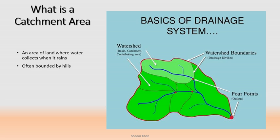Now, just as a bucket stores water in itself, that bucket has a boundary which is at a higher elevation than the middle portion where it stores water. Similarly, a catchment has hills as its boundaries, which are at higher elevation than its middle portion where water is stored.